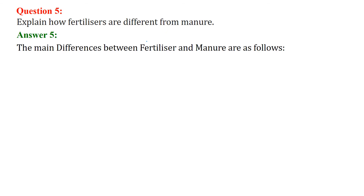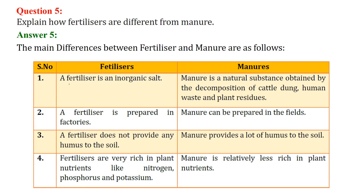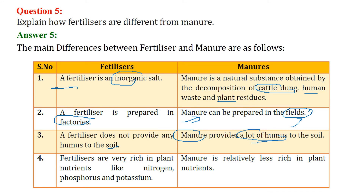Explain how fertilizers are different from manure. Fertilizer is an inorganic substance while manure is a natural substance obtained by decomposition of cattle dung, human waste, excreta, and plant residues. Fertilizers are prepared in factories, while manure is mostly prepared in fields. Fertilizers do not provide humus to the soil but manure provides a lot of humus. Fertilizers are very rich in plant nutrients like nitrogen, phosphorus, and potassium, whereas manure is relatively less rich in plant nutrients.